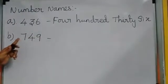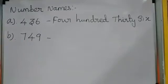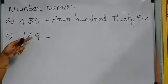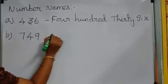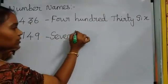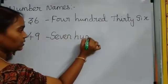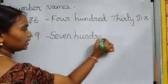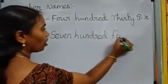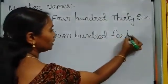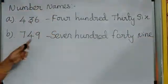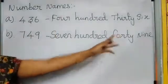How to read that number? 7, 4, 9 — that is 749. What is the spelling for 7? S-E-V-E-N. 7 — H-U-N-D-R-E-D, so 700. Plus 40 — F-O-R-T-Y. Plus 9 — N-I-N-E. So 749 is seven hundred and forty-nine.